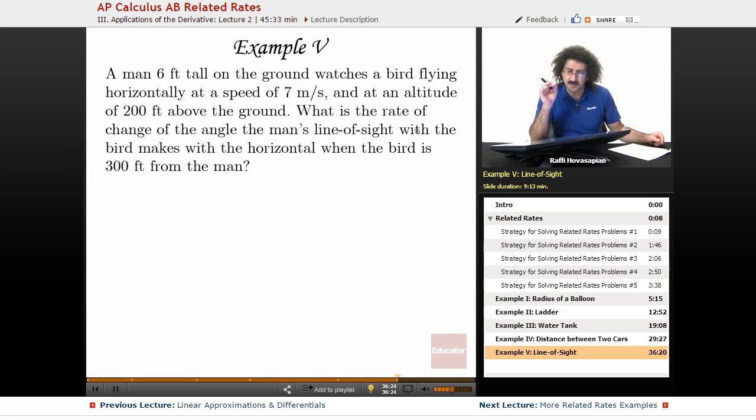A man six feet tall on the ground watches a bird flying horizontally at a speed of seven meters per second and at an altitude of 200 feet above the ground. What is the rate of change of the angle the man's line of sight with the bird makes with the horizontal when the bird is 300 feet from the man?